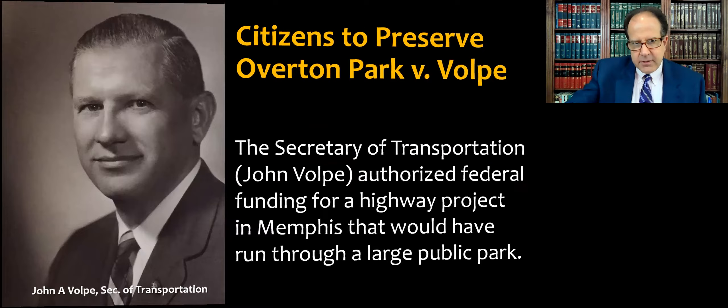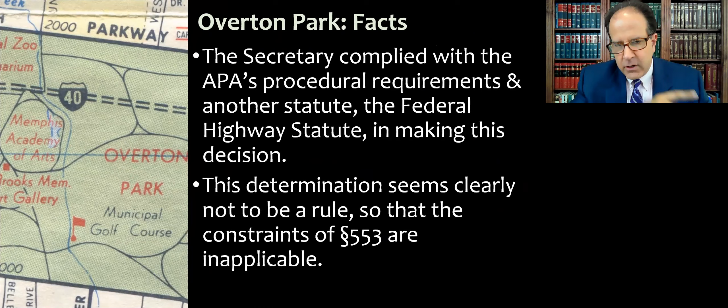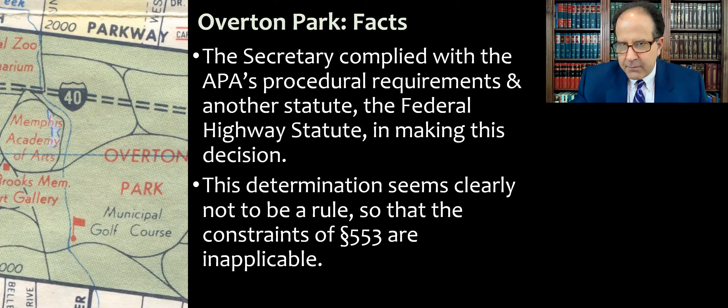The agency in this case is the Department of Transportation and the Secretary of Transportation, John Volpe at the time, who authorized federal funding to complete a highway project for Interstate 40 in Memphis that would have run through this large public park. To put it in perspective, this park is a few hundred acres right in the middle of Memphis. This is the era when we're completing the interstate highway system — I-40 runs east-west across the United States, kind of stopped at one side of Memphis and picks up again on the other side, and this was about connecting the dots or finishing the highway. The secretary complied with the APA's procedural requirements and the Federal Highway Statute in making his decision.